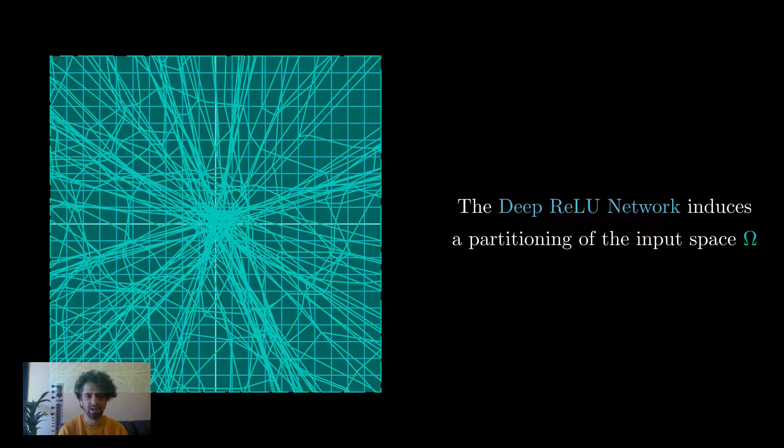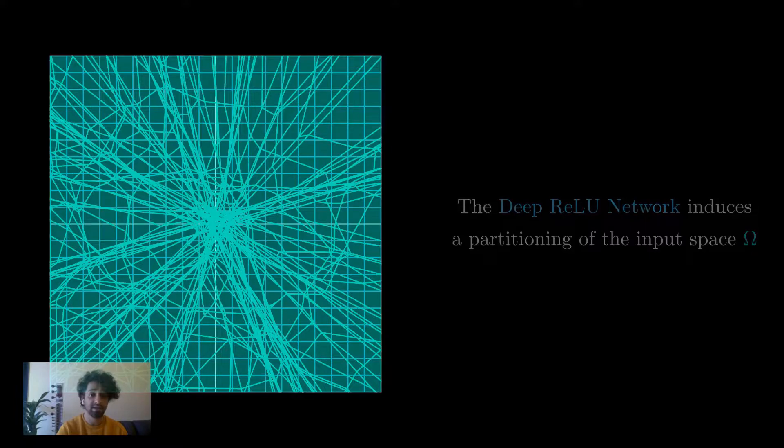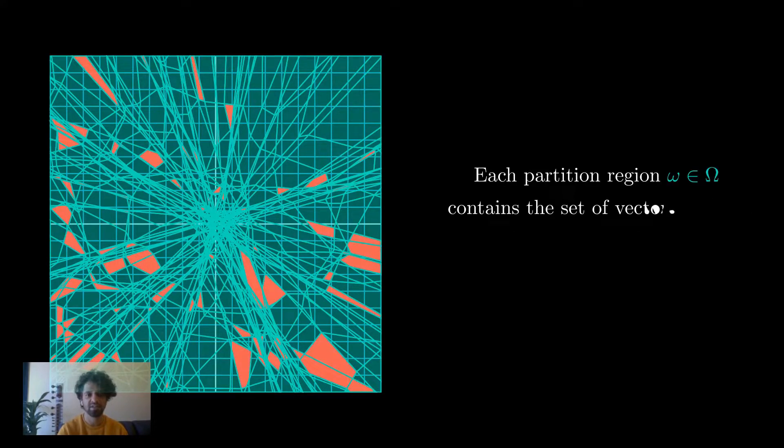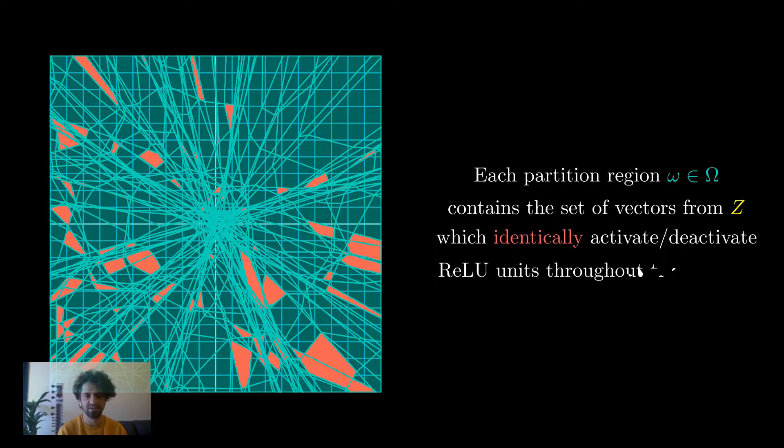For example, here the different straight and bent lines that we see are exactly different ReLUs for different depths of the network. Each of the partition regions contain the vectors in z that identically activate or deactivate all the ReLUs throughout the network.